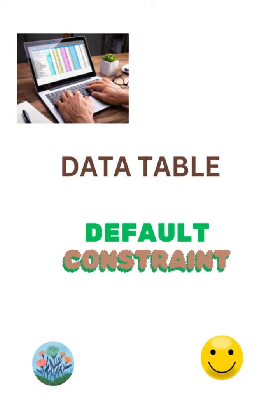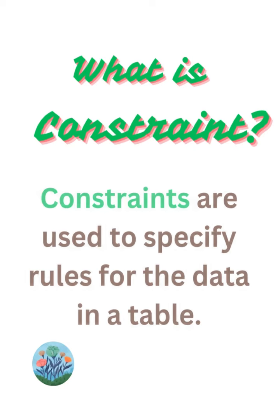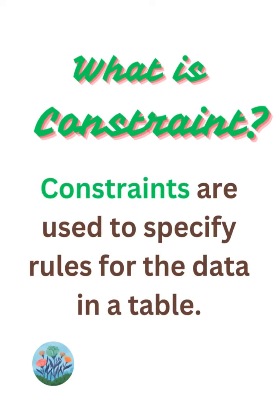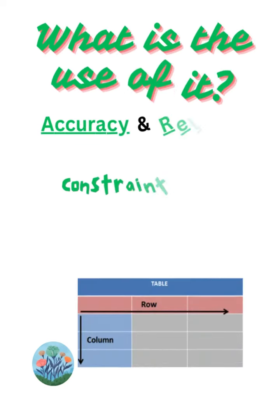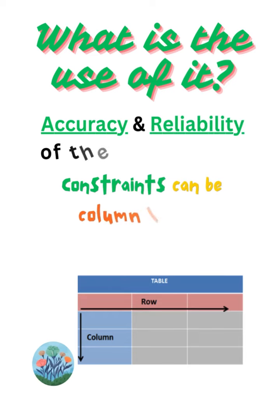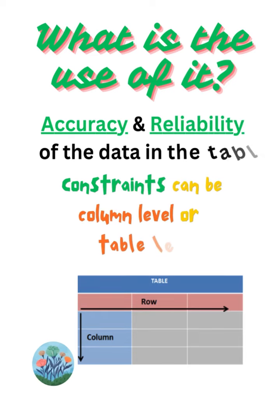This video is all about the default constraint used in the data table. Constraints are used to specify rules for the data in the table, to maintain accuracy and reliability of the data. Constraints can be column level or table level.